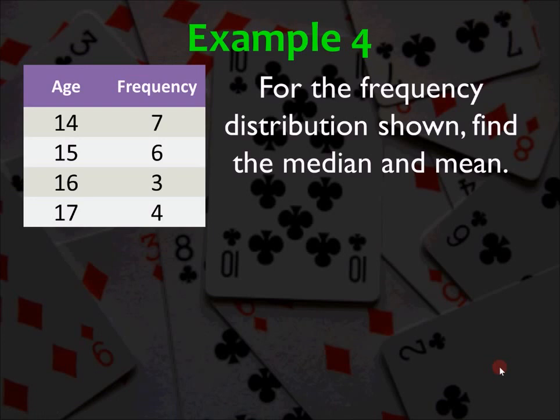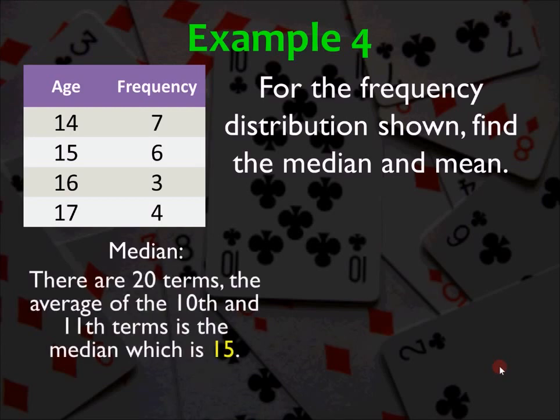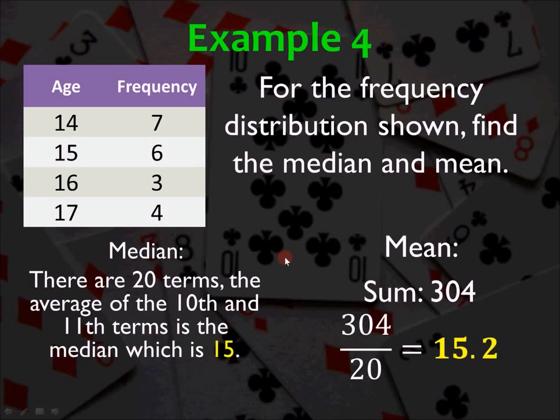Example 4, for the frequency distribution shown, find the median and the mean. So go ahead and try this one yourself, and we will resume the video when you're ready. All right, the median. Since there are 20 total terms, we're going to take the middle two terms. If you laid them all out, there are 7 fourteens, 6 fifteens, 3 sixteens, and 4 seventeens. The average of the 10th and 11th terms is the median, and they are both going to be 15, because you're going to have 15s that are in the middle. So the median is 15. The mean, you're going to add up all the numbers, so it's basically 14 times 7 plus 15 times 6 plus 16 times 3 plus 17 times 4 divided by 20. So that's 304 divided by 20, and the mean is 15.2. So these are both measures of center, and you see that they're both pretty close to each other. That's going to be the case sometimes, but that won't always be the case, and we'll look at that more tomorrow.